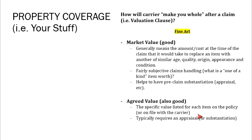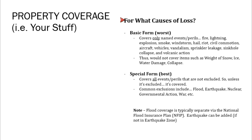The third question in property insurance is for what causes of loss. A cause of loss is the thing that went wrong — a fire, water damage, a broken pipe, flood, earthquake, vandalism. A cause of loss form is buried within your property insurance policy and spells out exactly what's covered and what's not. There are two types of cause of loss forms: basic form, which is the worst, and special form, which is the best. Basic form provides coverage for named events only — typically 10 to 12 events like fire, lightning, explosion, smoke, windstorm, hail, riots, vandalism, and volcanic action.